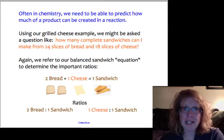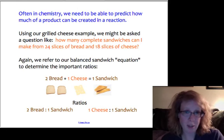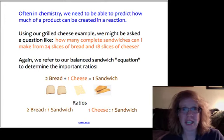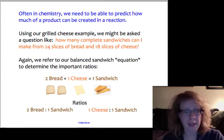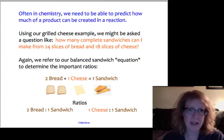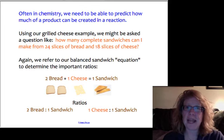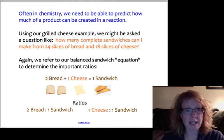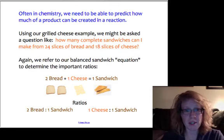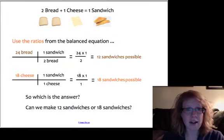So in chemistry, a lot of times we need to be able to predict how much product we're going to make. I need to know how many sandwiches I can produce, given a certain amount of cheese and a certain amount of bread that I have in my kitchen. So for example, I've got that in orange there, how many total sandwiches, complete sandwiches can I make if I have 24 slices of bread and 18 slices of cheese? Well, let's take a look at that balanced chemical equation, right? Two breads plus one cheese equals a sandwich. So our ratios are two breads to one sandwich or one cheese to one sandwich. So how's that going to affect our outcomes?